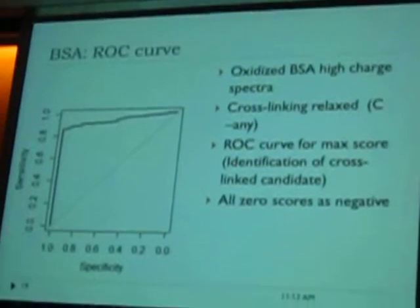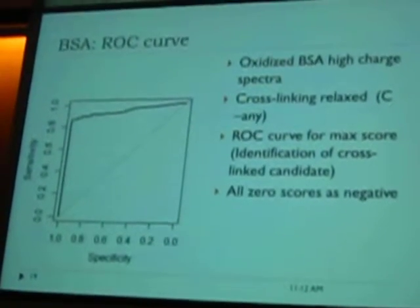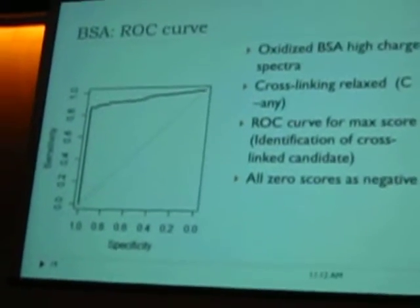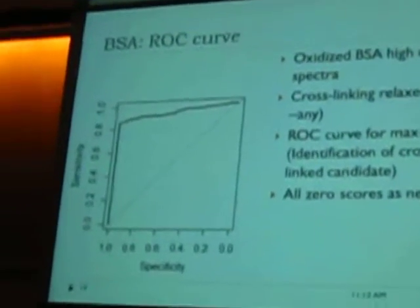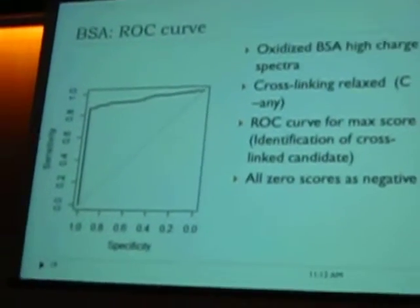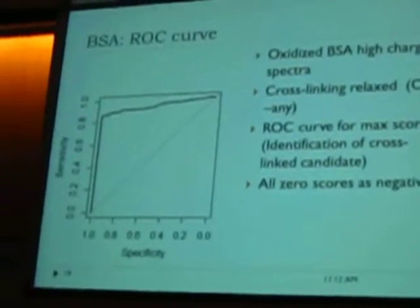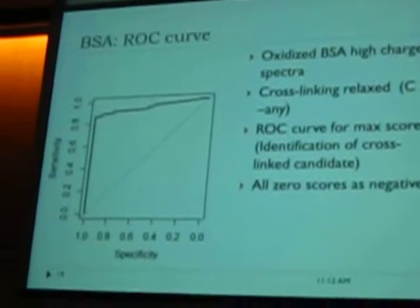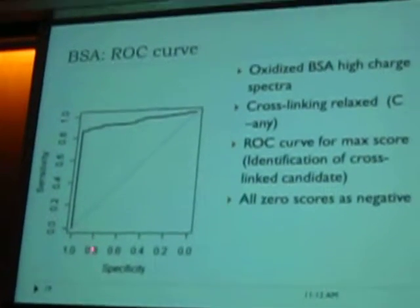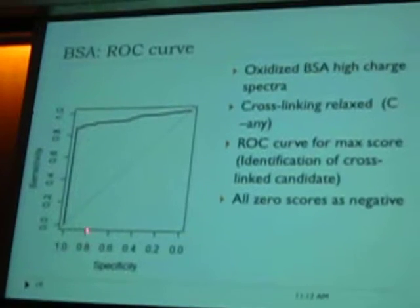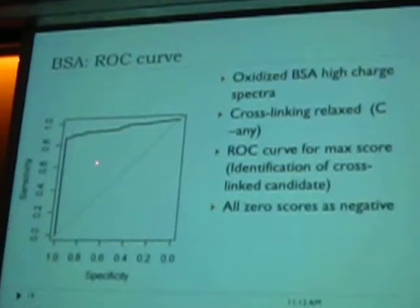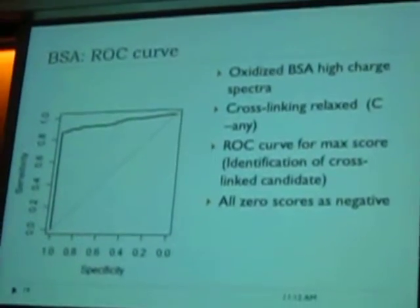Another part is we analyzed the ROC curve, where we fed wrong information to XLPM — stating that disulfide bonds are possible not just between cysteine to cysteine, but between cysteine to any amino acid. So if we get a disulfide bond between cysteine to alanine, that is supposed to be a false positive. Using this data, we obtained the ROC curve, and you can see it's a pretty good ROC curve with an area under the curve of around 0.97.